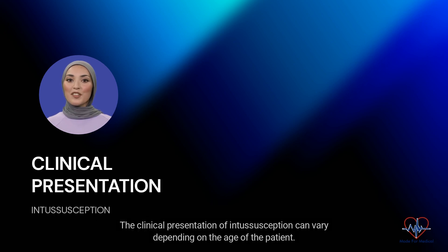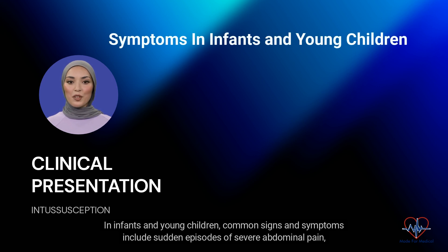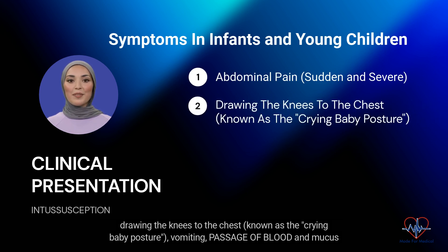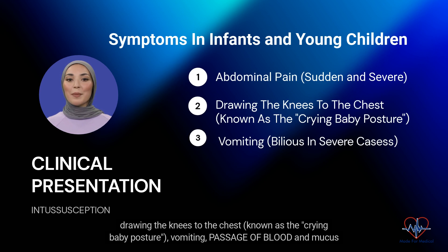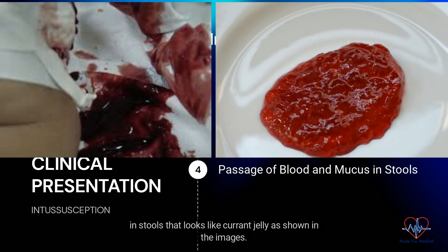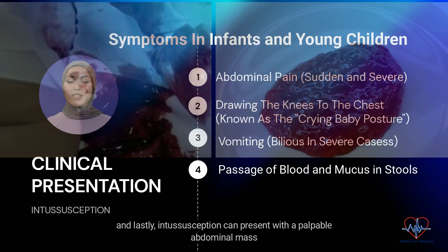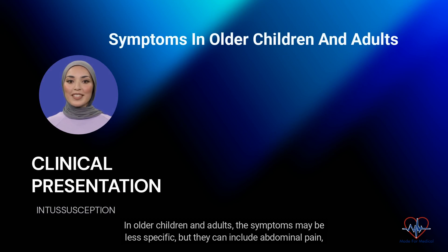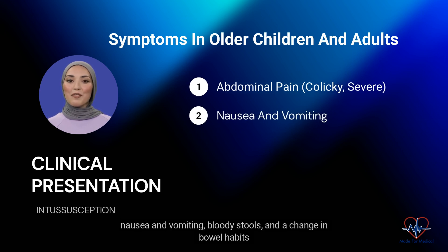The clinical presentation of intussusception can vary depending on the age of the patient. In infants and young children, common signs and symptoms include sudden episodes of severe abdominal pain, drawing the knees to the chest — known as the crying baby posture — vomiting, passage of blood and mucus in stools that looks like currant jelly as shown in the images, and a palpable abdominal mass. In older children and adults, the symptoms may be less specific, but can include abdominal pain, nausea and vomiting, bloody stools, and a change in bowel habits.